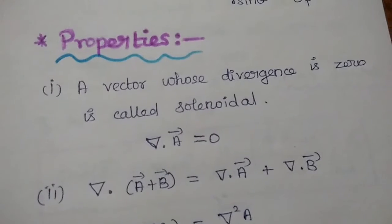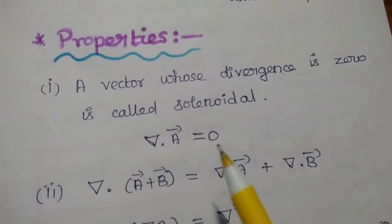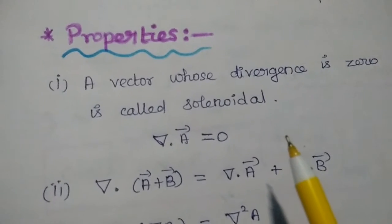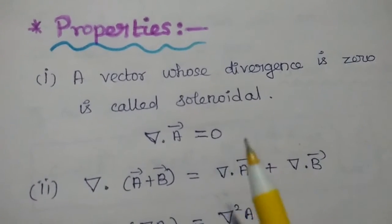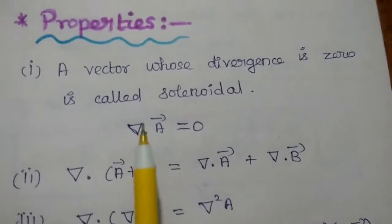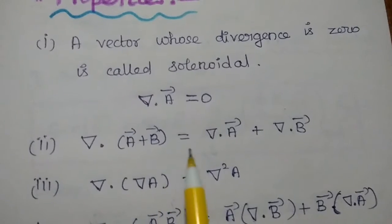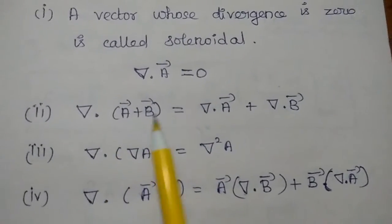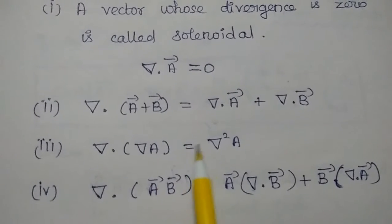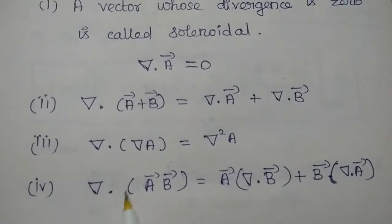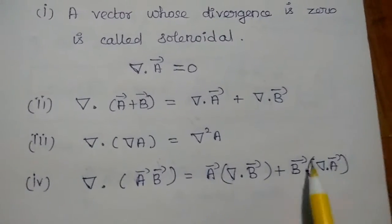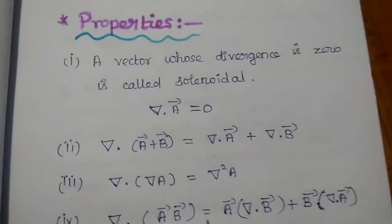Next, the properties of divergence. A very important property: a vector whose divergence is 0 is called solenoidal. The divergence of any vector equal to 0 means it is a solenoidal vector. Another property: del dot (A + B) vector equals del dot A + del dot B, just like the distributive law. Also, del dot (∇A) — divergence of the gradient of a scalar — is equal to ∇²A. And del dot (A·B) = A·(del dot B) + B·(del dot A). These are all important properties of the divergence.